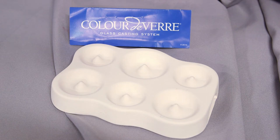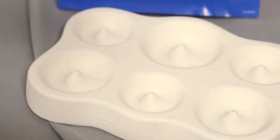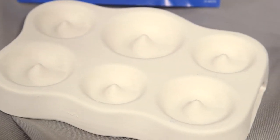The first demonstration is priming a Color Devere mold of simple round beads with BN aerosol. These are reusable molds used for art glass casting or slumping.